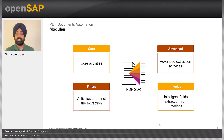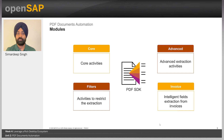The PDF activities are divided into four categories. Core activities are simple activities that return the result as text and not in complex format. Advanced activities return the result in complex formats. Filters act as a funnel and restrict the extraction to a specific part of the page. Invoice activities extract fields from invoices without the need of specifying search patterns or strings.